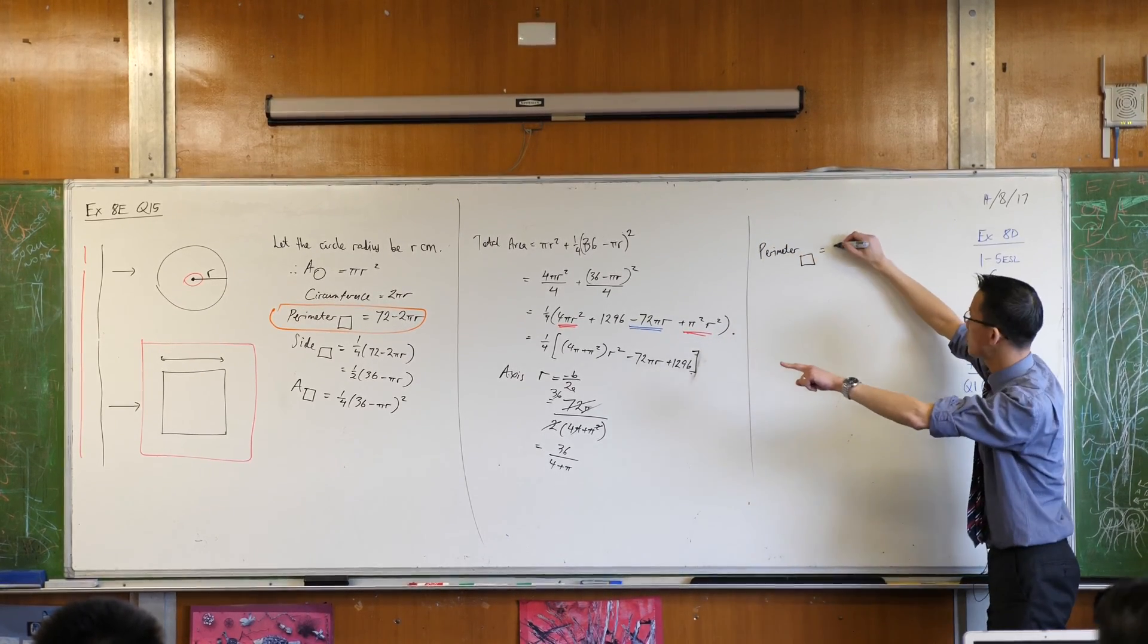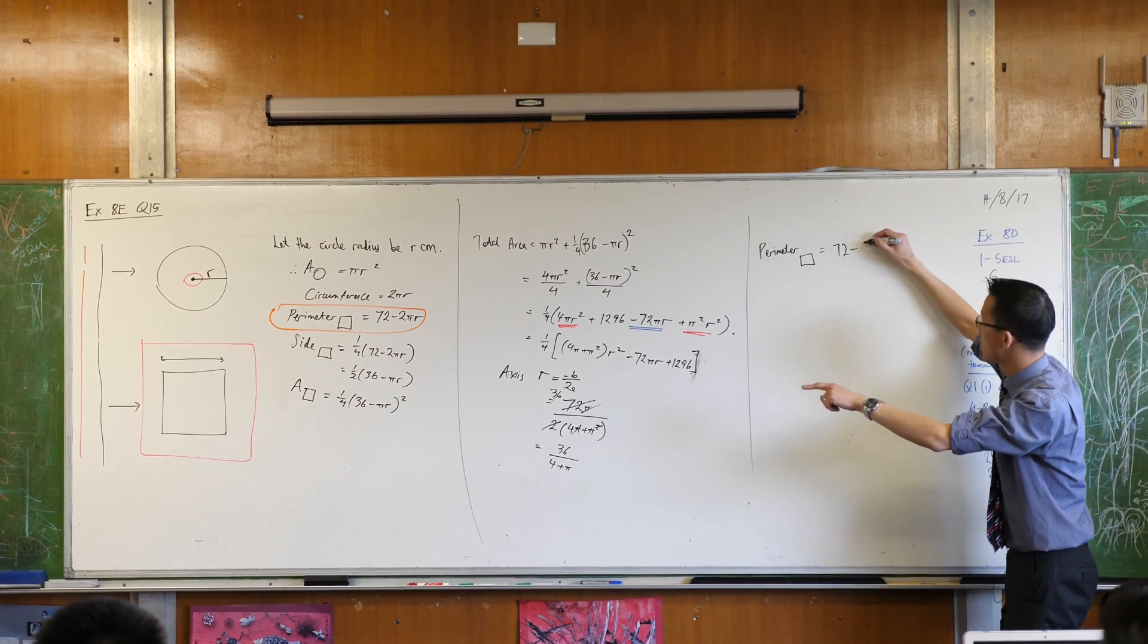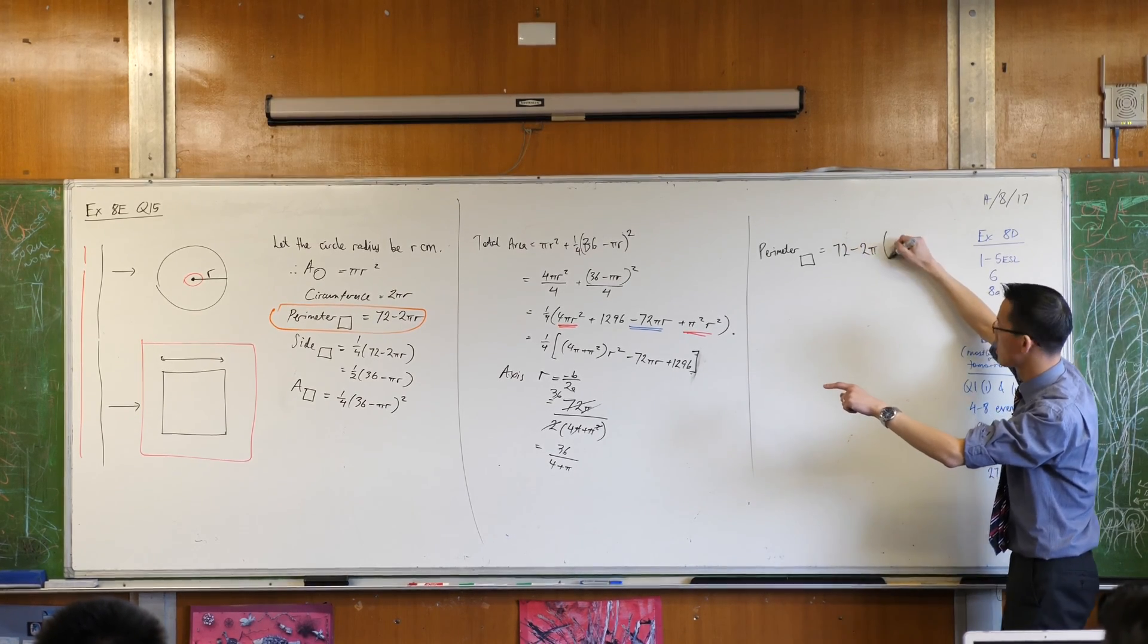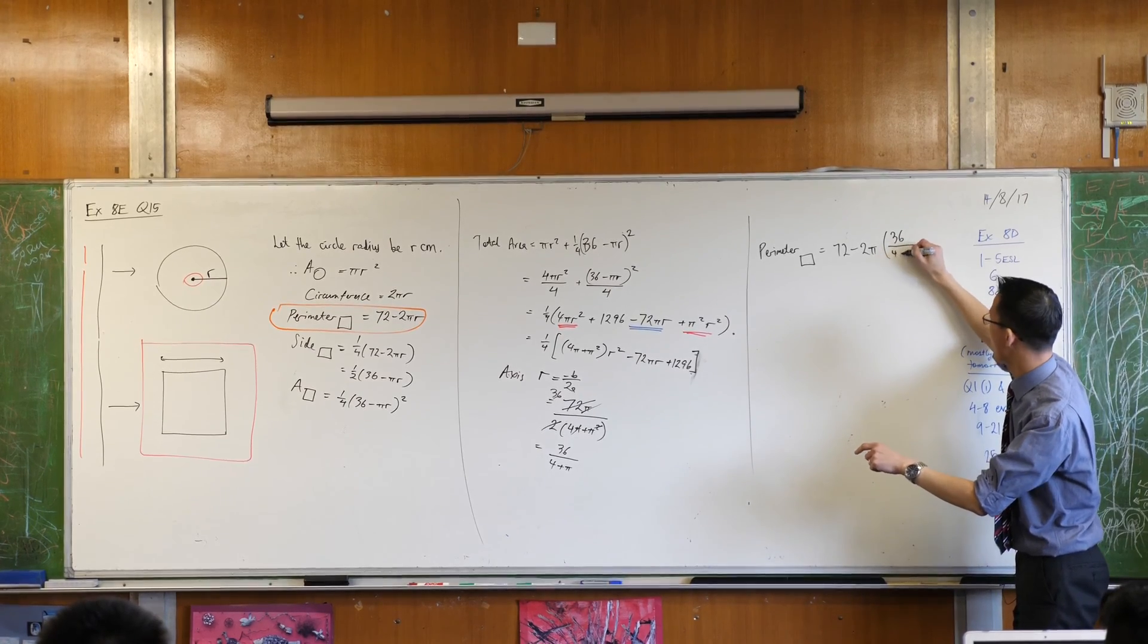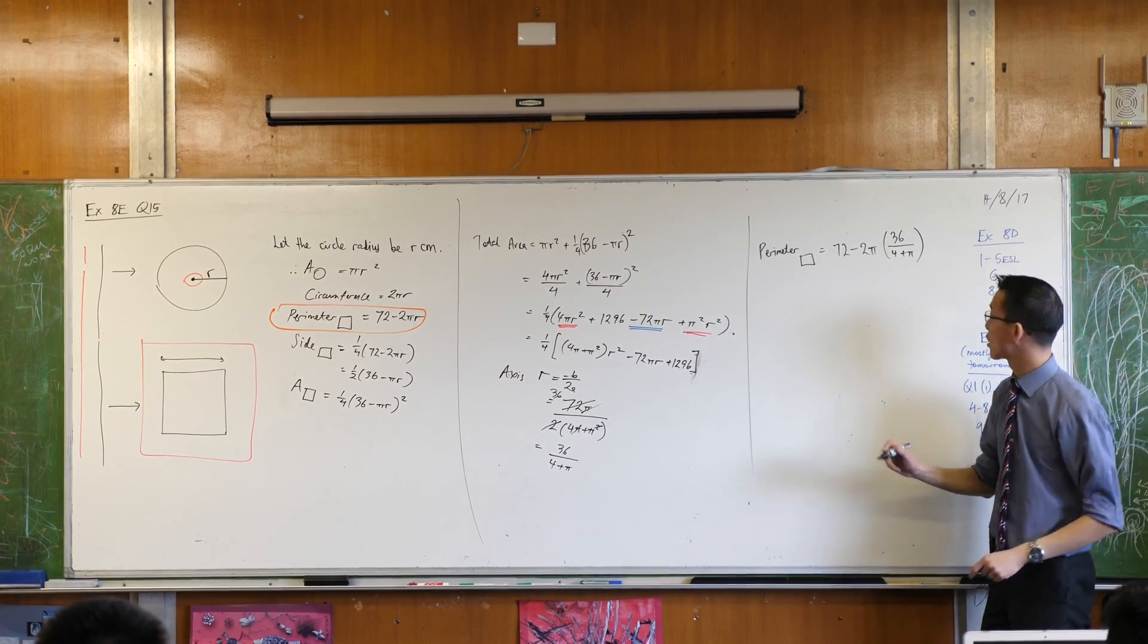Perimeter equals, there it is, 72 minus 2 times pi times this guy. What have I got? 4 plus pi.